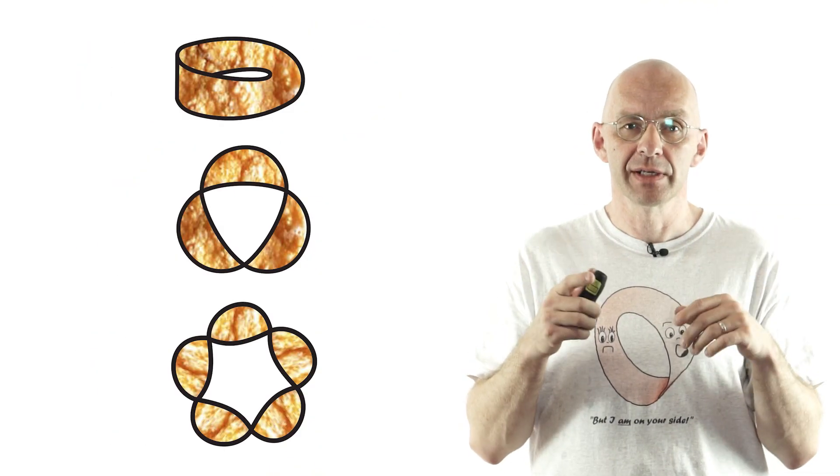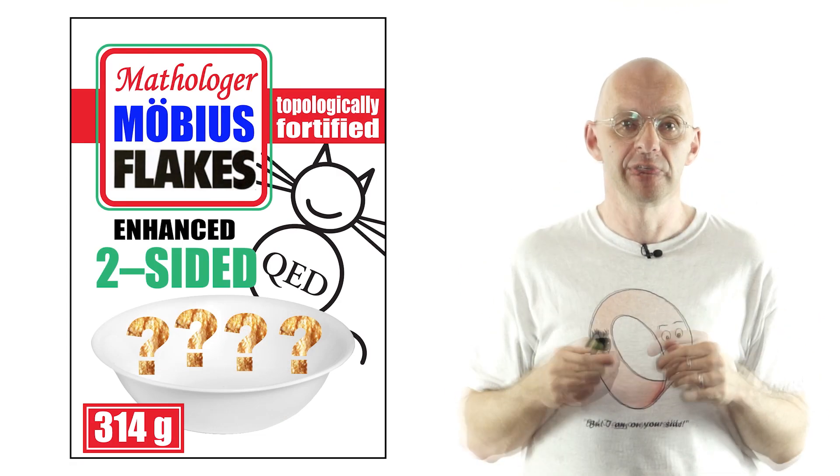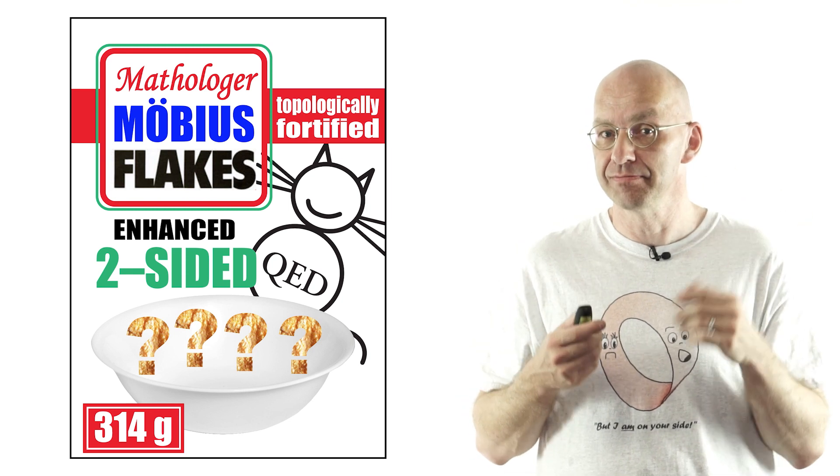Now I claim there are ways to bring together the end into Möbius strips that are two-sided. Hard to imagine. How is that miracle possible?